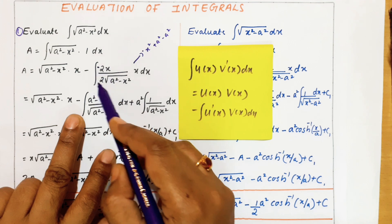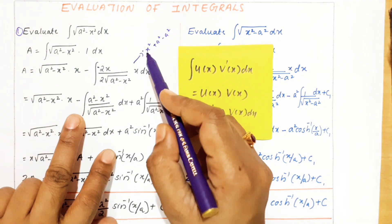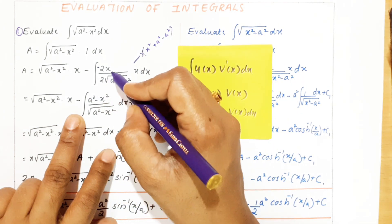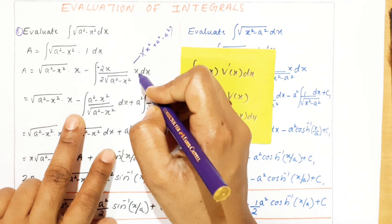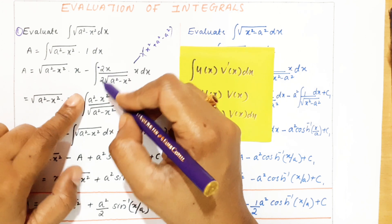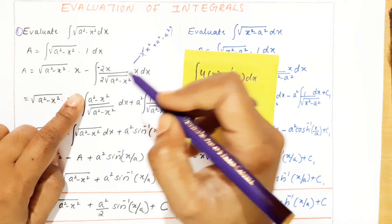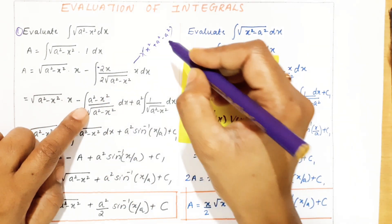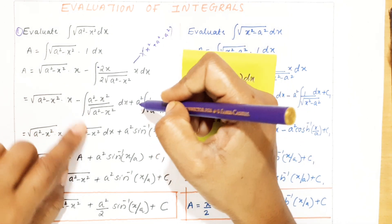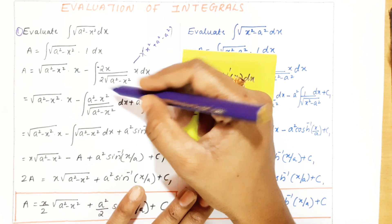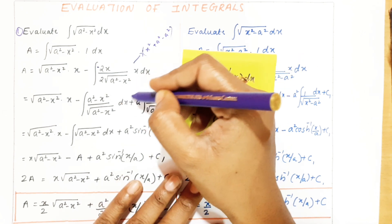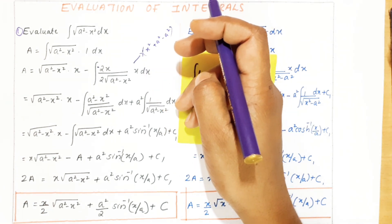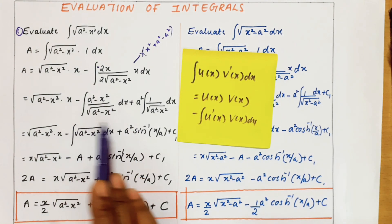So what we are doing here: with that x² we are adding one a² and subtracting one a² — plus a², minus a². Now that minus x² is there, with that minus x² we need to add one a². Here one minus is there, so it is minus a². And the next term should be this: plus a². So this is your plus a² and this is your minus a². So we are doing it in that form.